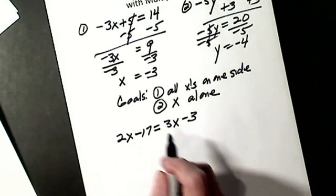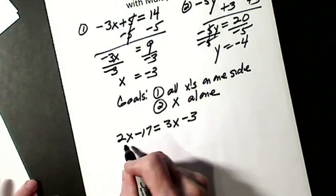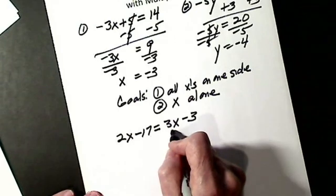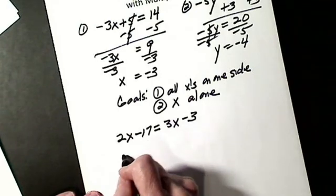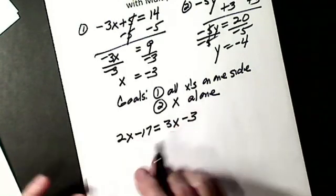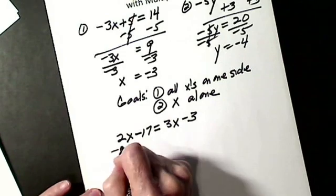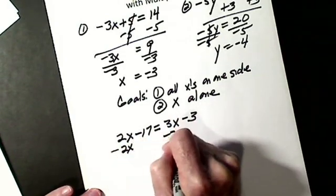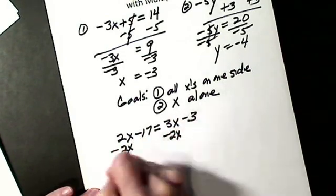So I'm going to start with my lower coefficient. You could start here, but then you'll get minus X if that's what you want. I'm going to subtract 2X, subtract 2X.